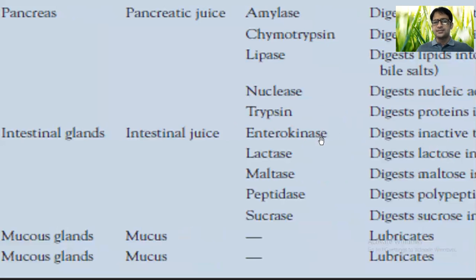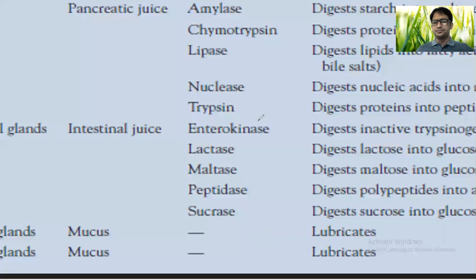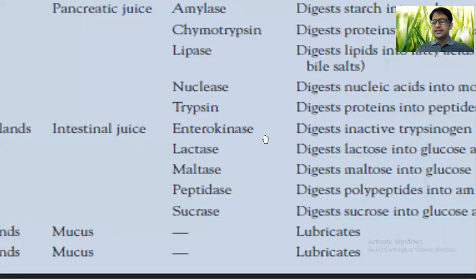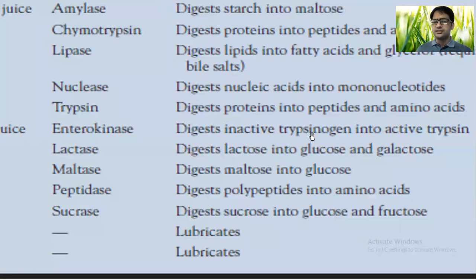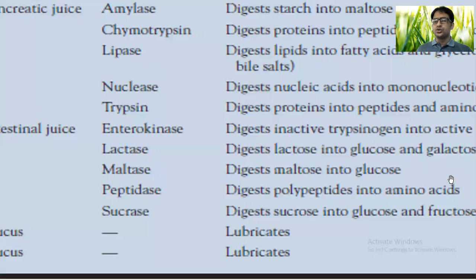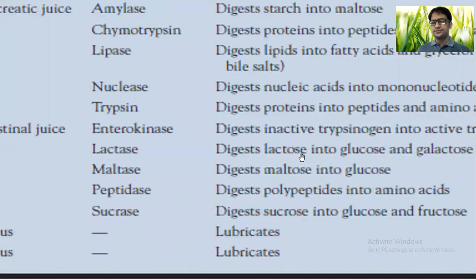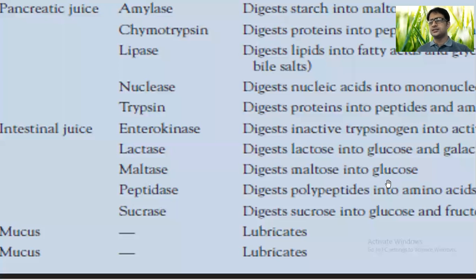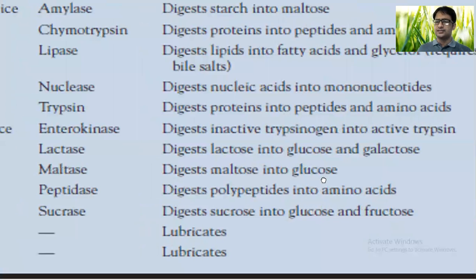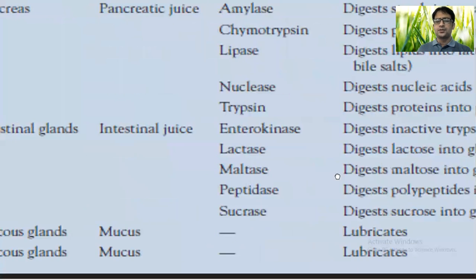Intestinal glands in the small intestine produce certain enzymes. Enterokinase is produced by the duodenum and converts inactive trypsinogen into active trypsin. Lactase digests lactose into glucose and galactose. Maltase digests maltose into glucose, since maltose is a disaccharide with two glucose monomers. Peptidase digests polypeptides into amino acids. Sucrase digests sucrose into its two monomers, glucose and fructose. Mucus again functions in lubrication.